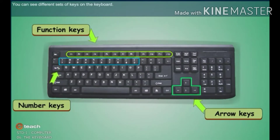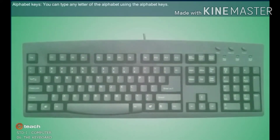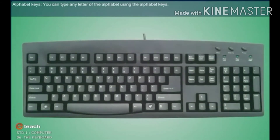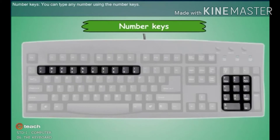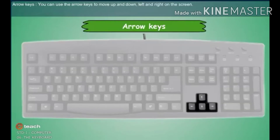You can see different sets of keys on the keyboard. Alphabet Keys: You can type any letter of the alphabet using the alphabet keys. Number Keys: You can type any number using the number keys. Arrow Keys: You can use the arrow keys to move up and down, left and right on the screen.